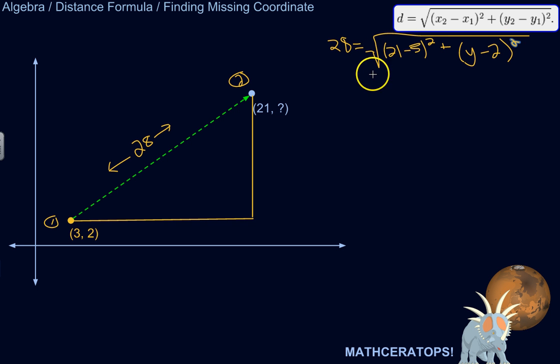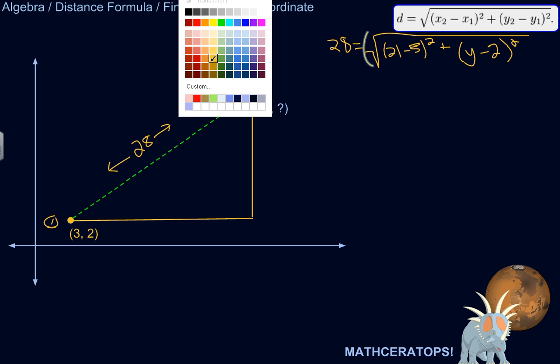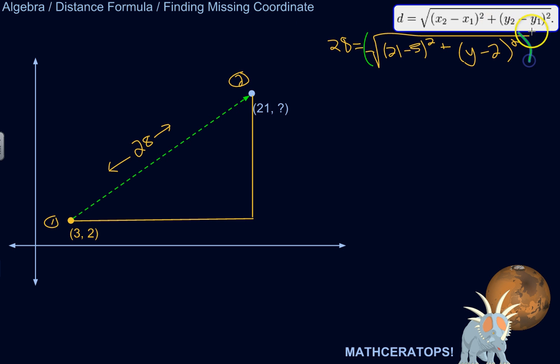All right. So we need to get y by itself. And it's kind of heavily involved in a lot of operations here. So let's just kind of unravel the onion here. First of all, all this is being square rooted. So let's actually square both sides, which will undo that. Let me switch colors here.